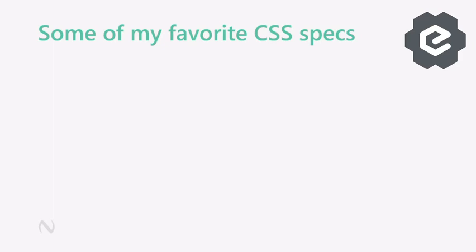So just a few of my favorite specs: Syntax, where all the parsing, tokenization and such happens. Conditional rules, which ties into media queries and feature queries (supports). There's the really brand-new nesting module that's derived from preprocessors. There's the Cascade — and to be honest, a lot of developers misunderstand the cascade, they kind of hate it. But I believe the cascade is your friend, not your enemy. But that'll be for another time.